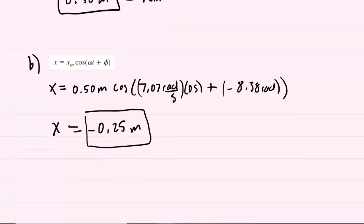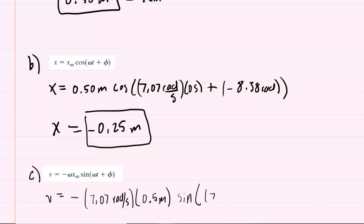And then for part C, we need the velocity at time 0. So let's paste in the velocity equation and simply plug in the known values. So we have negative angular frequency, 7.07 radians per second, times the amplitude of 0.5 meters, multiplied by sine of 7.07 radians per second times 0 seconds, plus the phase constant of negative 8.38 radians.